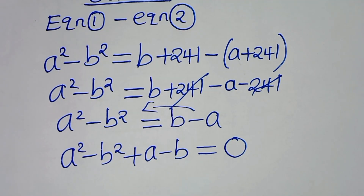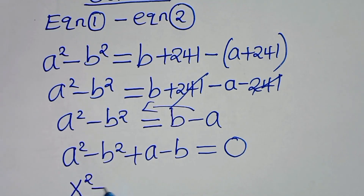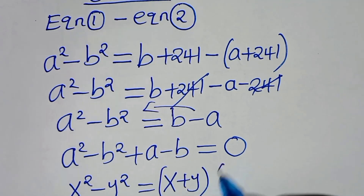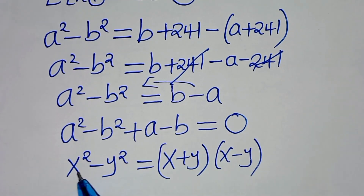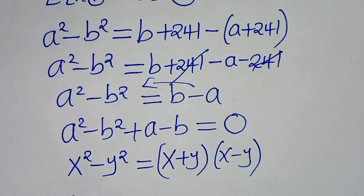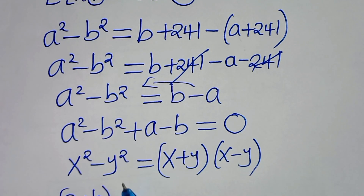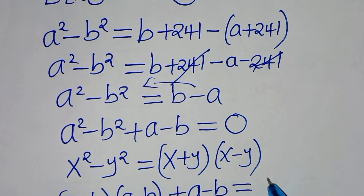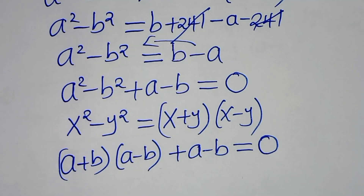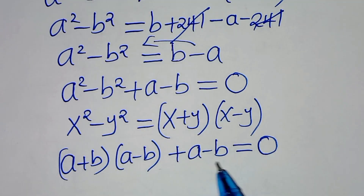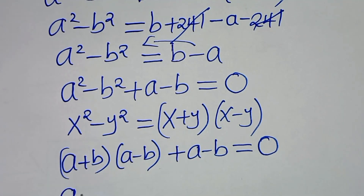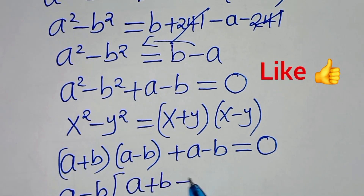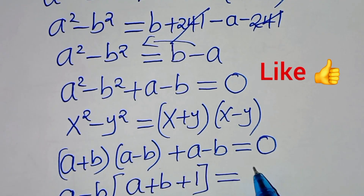Now a squared minus b squared is in the form x squared minus y squared, which factors as (x plus y)(x minus y). Applying this identity gives (a plus b)(a minus b), plus (a minus b) equals 0. Since (a minus b) is common, we factor it out to get (a minus b)(a plus b plus 1) equals 0.